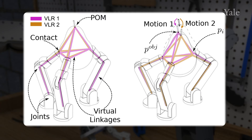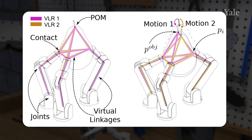Particularly, VLRs estimate the contact locations of the system, and are acquired via coordinated finger movements and probabilistic reasoning.